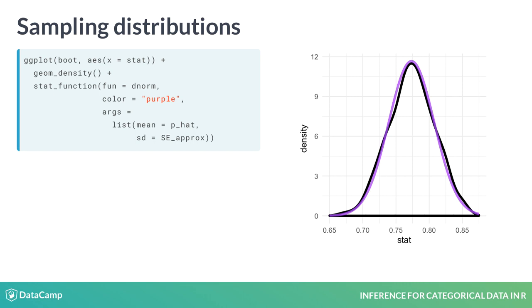We see that the normal approximation looks fairly similar to the density curve of our bootstrap distribution. This will be a recurring theme, that when an approximation method exists, it will tend to give a very similar result to the computational method when the assumptions of that approximation are reasonable.